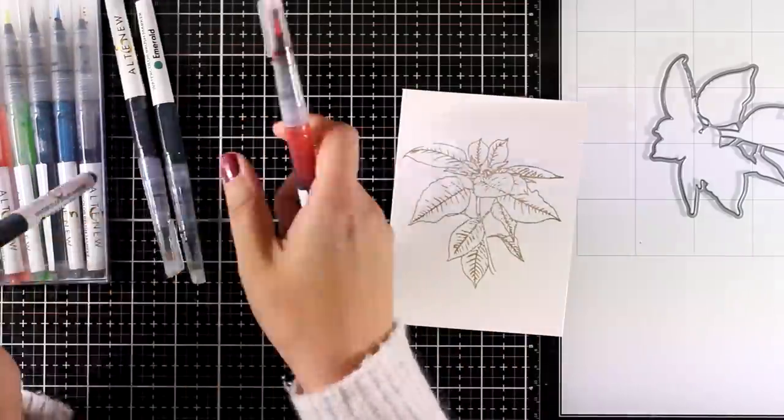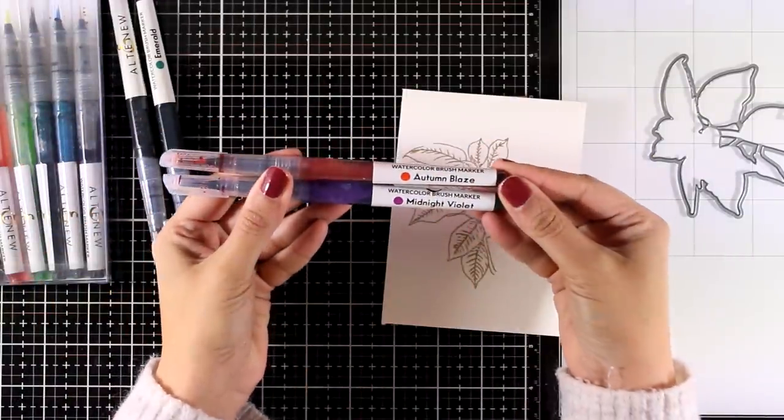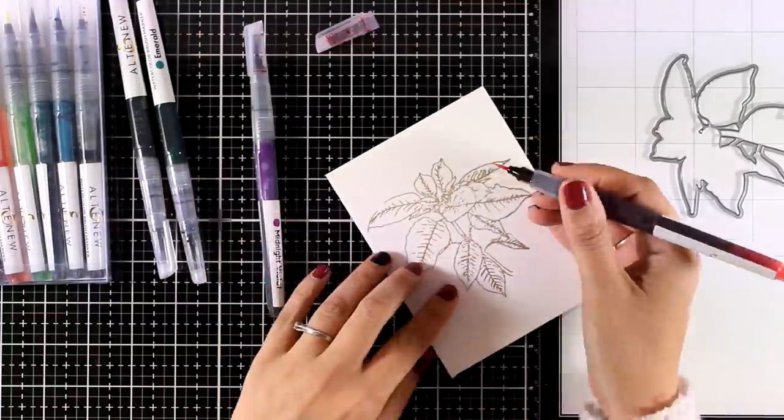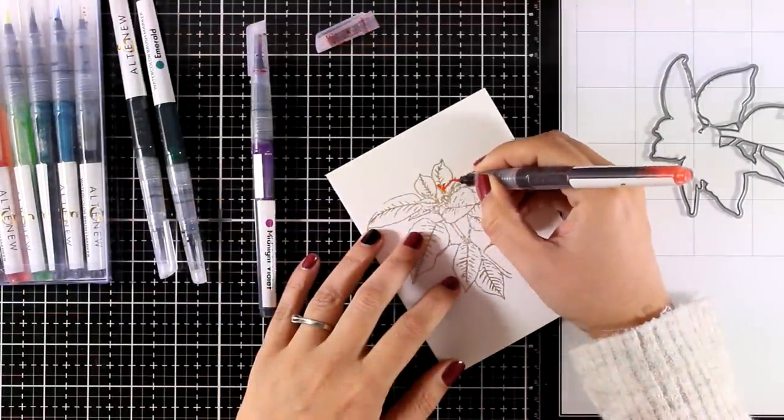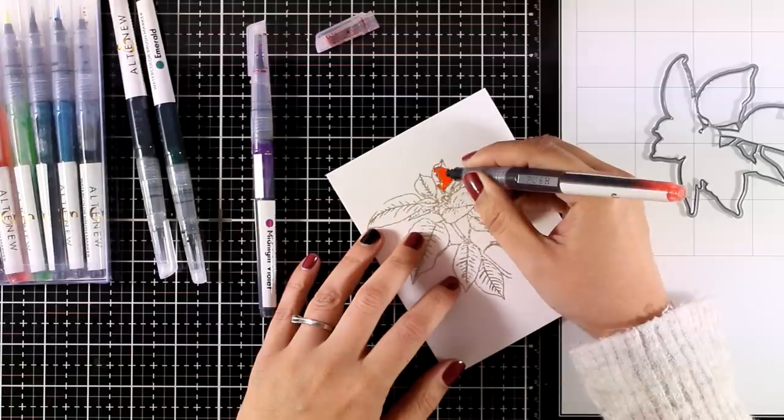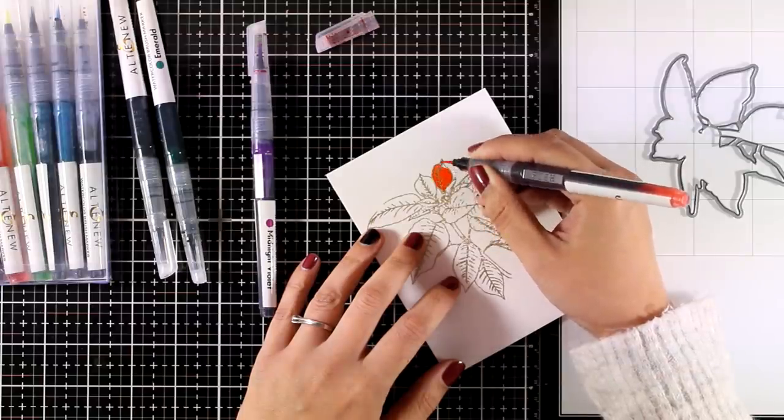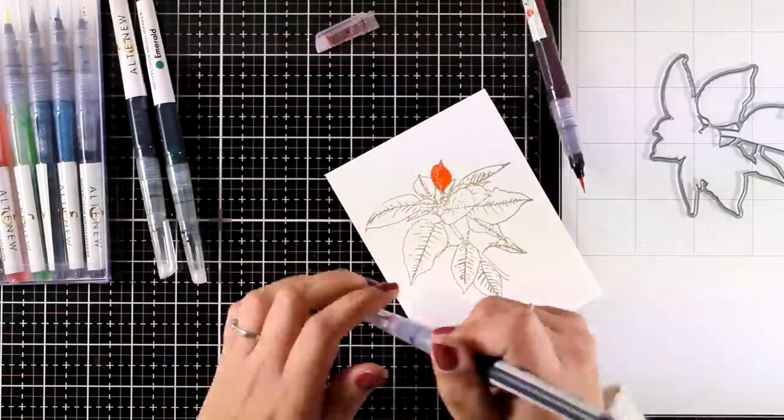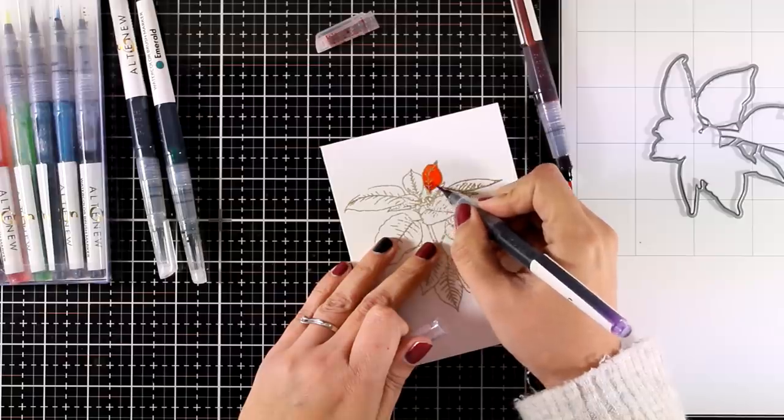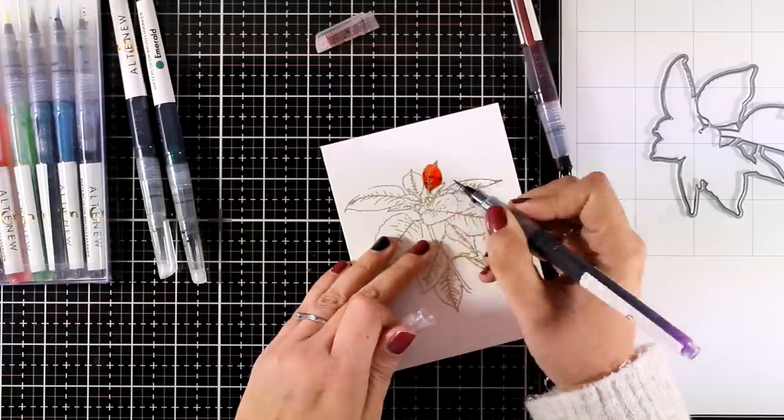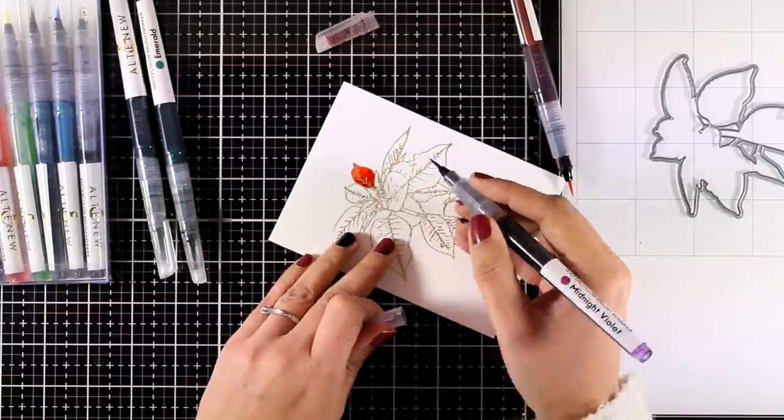But that depends on the look that you are going for. For coloring my image, I will be using my watercolor brush markers by Altenew, and for the red leaves, I will use Midnight Violet as my darker shade, and Autumn Blaze as the lighter one. With these markers, it's really easy to blend the colors directly on your watercolor paper.